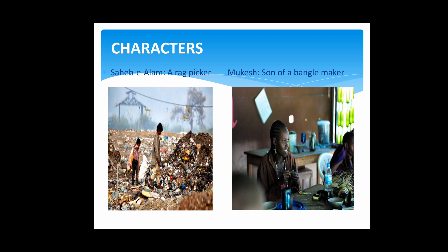The first character is Saheb Alam, who is a rag picker. The irony lies in the meaning of his name — 'Lord of the Universe.' According to his name, he should be a king and enjoy all the luxuries of life, but unfortunately he is a rag picker who moves barefoot and lacks all the basic necessities of life. Another character is Mukesh, son of a bangle maker. His family members have taken their situation as their destiny — even Mukesh's grandmother says they are destined to work like this; it is their karam.